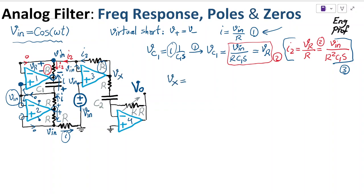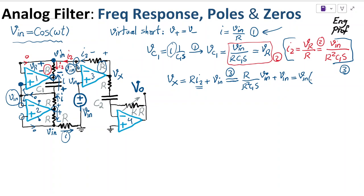V_x equals the voltage drop across this resistor, which is R·i2, plus the voltage at this node, which is V_in. Substituting from equation 3 for i2, V_x becomes R divided by R²·C1·S times V_in plus V_in. Factoring V_in and canceling R with R² in the denominator gives V_x = V_in · (1/(R·C1·S) + 1), or equivalently V_in · (1 + R·C1·S) / (R·C1·S). This is equation 4, defining V_x as a function of V_in.